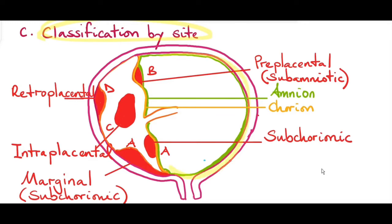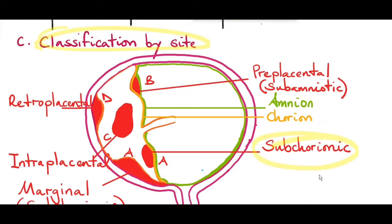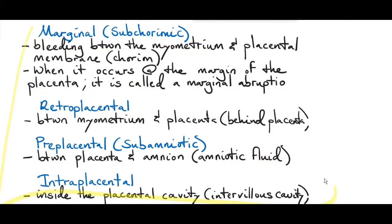Classification by side: the amniotic sac is made of the amnion, which is the inner membrane, and the chorion, which is the outer membrane that forms a close attachment to the placenta. Subchorionic abruption is bleeding between the chorion and the placental bed. If this occurs at the margin of the placenta it's called marginal subchorionic abruption — bleeding between the myometrium and the placental membrane. Pre-placental, also known as sub-amniotic, is bleeding between the placenta and the amnion. Intraplacental is bleeding inside the placenta in the intervillous cavity. Retroplacental is bleeding between the myometrium and the placenta, so the hemorrhage is hidden behind the placenta.